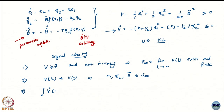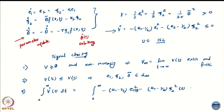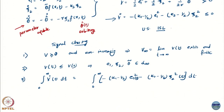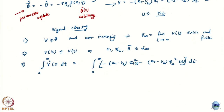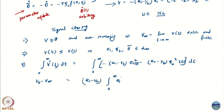Integrating both sides: the integral from 0 to infinity of V-dot dt equals the integral from 0 to infinity of minus (k1 minus half) e1-squared minus (k2 minus half) psi2-squared. The left-hand side is V-infinity minus V(0), so flipping signs: V(0) minus V-infinity equals (k1 minus half) times the integral of e1-squared plus (k2 minus half) times the integral of psi2-squared.